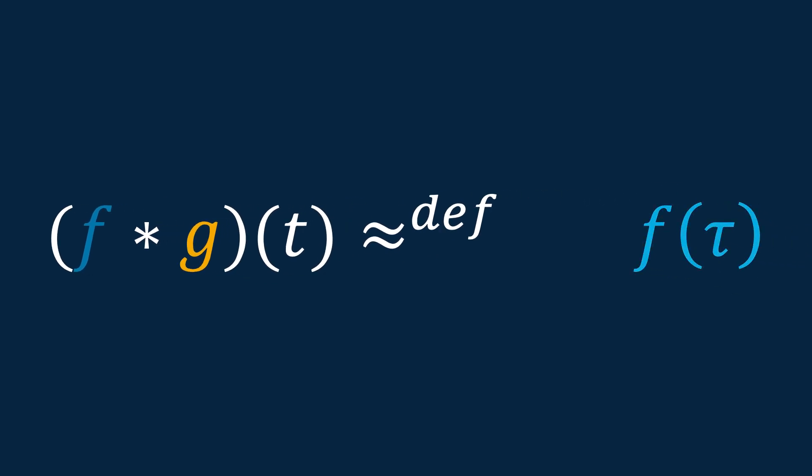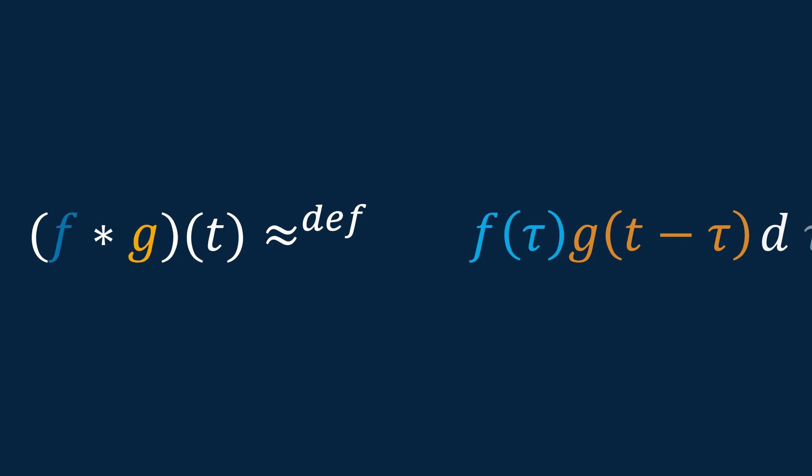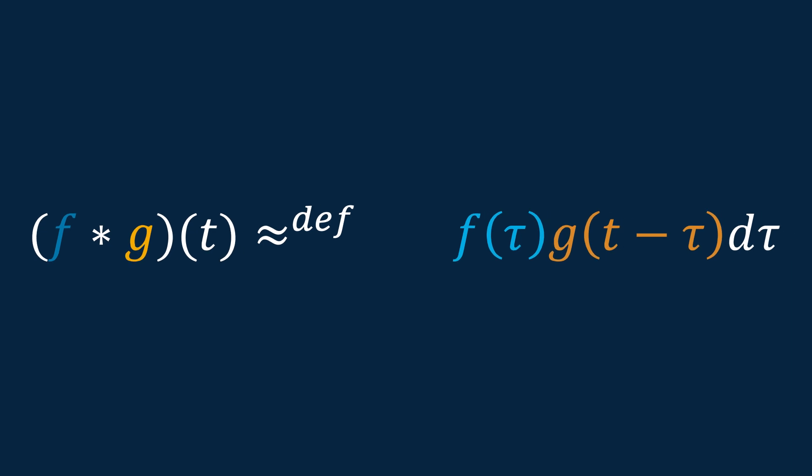Think of f of tau as capturing a snapshot of the first function at a specific moment, tau. G flips the second function around and shifts it to align with the moment we're considering. By multiplying these two snapshot values, we're calculating the degree of their interaction, essentially asking, how much does the shape of one function at this moment affect the shape of the other? The integral then tells us to add up all these interactions over every possible tau, giving a complete picture of how the entire first function is transformed by the entirety of the second.